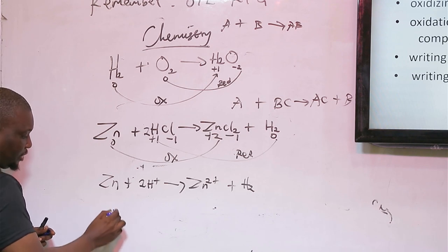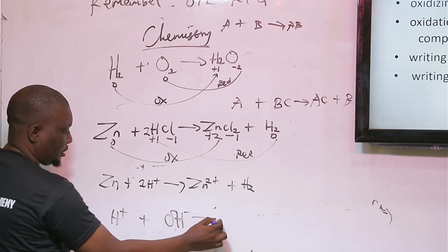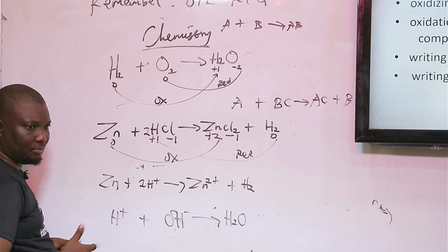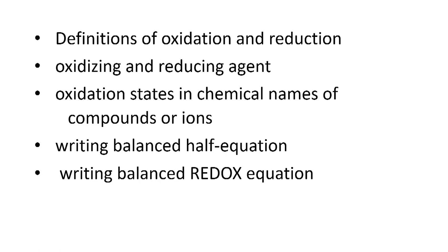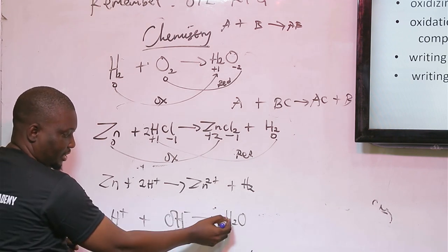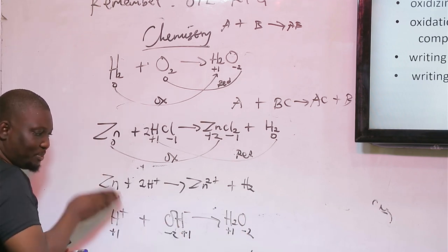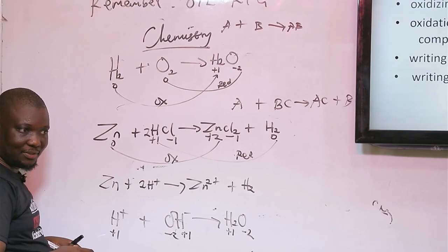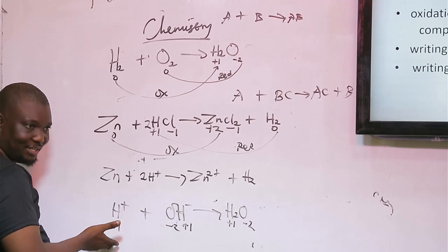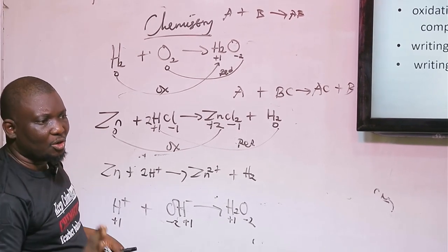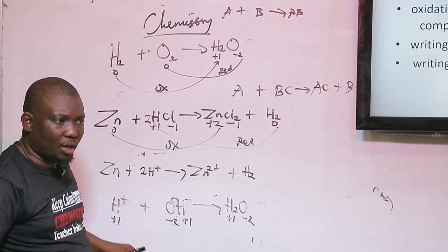Now check this reaction: H⁺ + OH⁻ → H2O. Is this a redox reaction? The oxidation state of hydrogen is plus 1 throughout, and oxygen is minus 2 throughout. There is no change in oxidation states, so this is not a redox reaction. This is a neutralization reaction — acid plus base — also called a double decomposition reaction. Neutralization and double decomposition reactions are not redox.